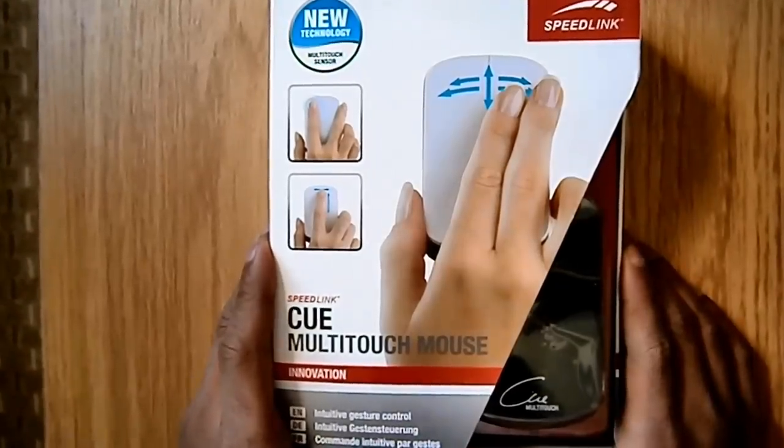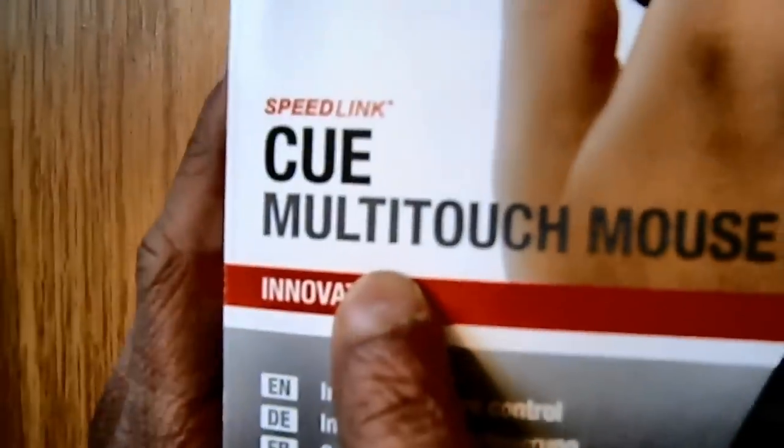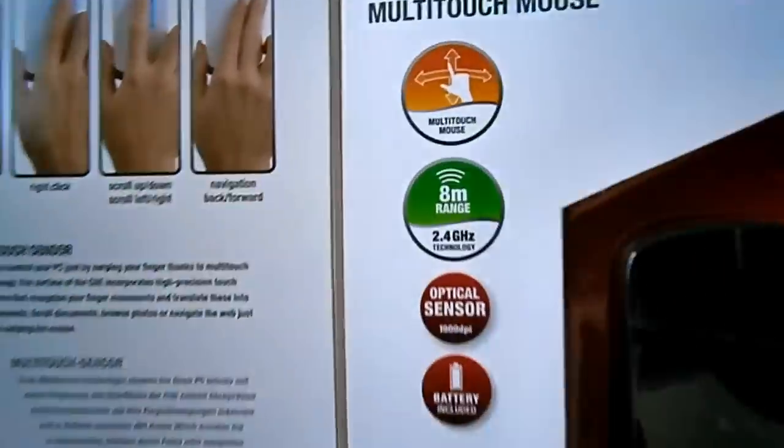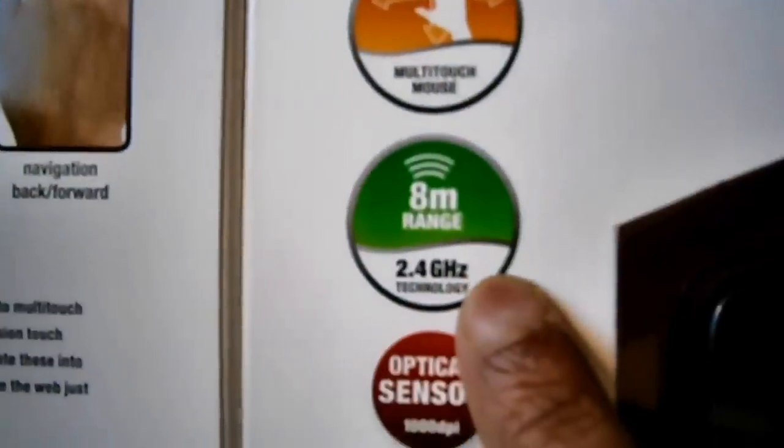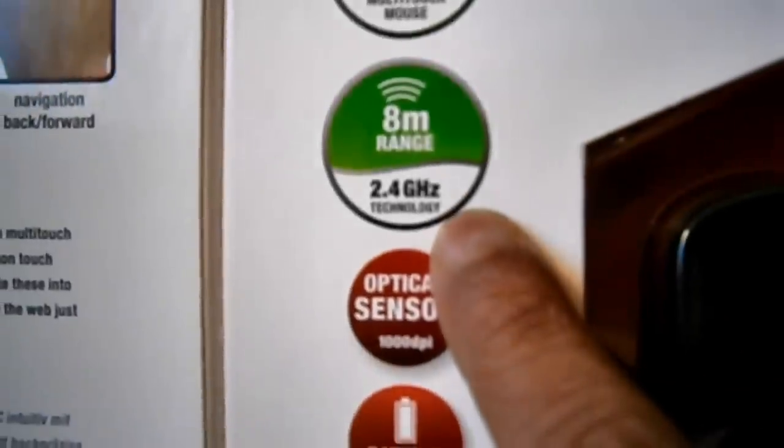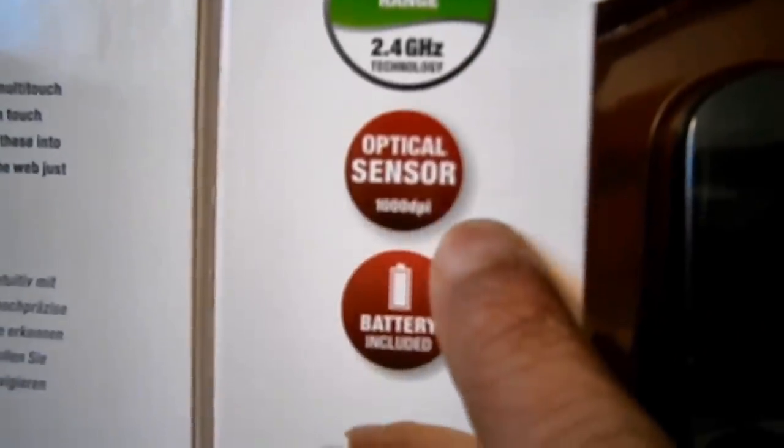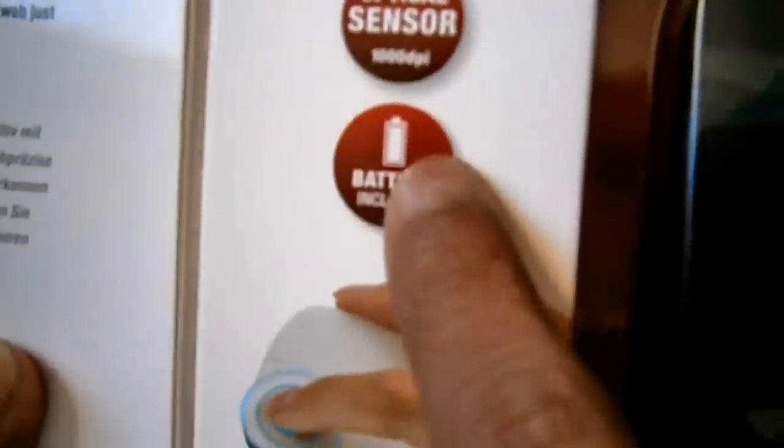Hi, this is ZenFX Media and I'll be doing a review of the Speedlink Q Multi-Touch Mouse. As you can see, it's got 8 meters of range at 2.4 GHz technology. It's got an optical sensor of 1000 DPI and comes with a battery.